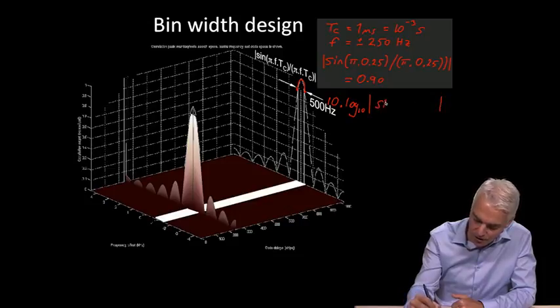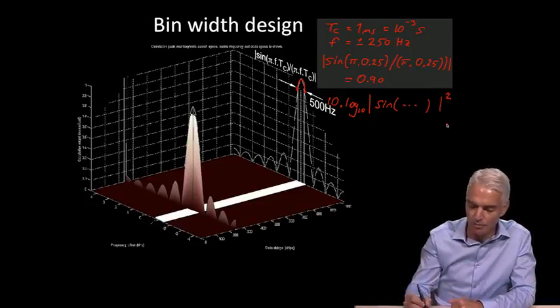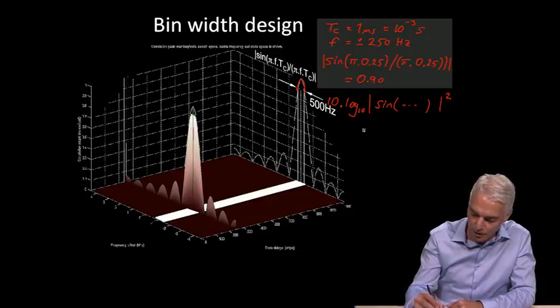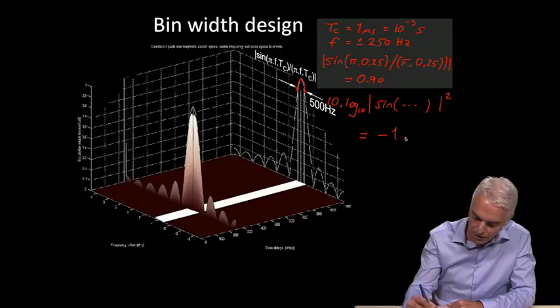If we're going to take dB, we need a power ratio. We want 10 times log 10 of the same thing. But we have to square it to get a power ratio before we can take 10 log 10. If we do that and put the 0.9 in there, we get out minus 1 dB.